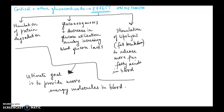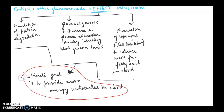The point here is that cortisol and other glucocorticoids work to provide more energy molecules into the blood, thereby having a positive effect on metabolism. That is the ultimate goal of cortisol and other glucocorticoids — they provide more energy molecules into the blood by these processes.